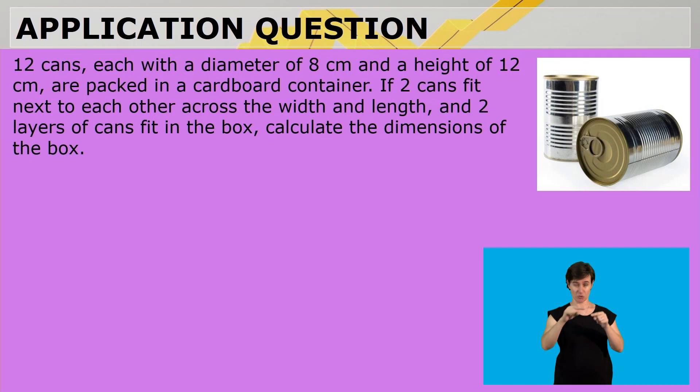Let's look at the last question. 12 cans, each with a diameter of 8 centimeters and a height of 12 centimeters, are packed in a cardboard container. If two cans can fit next to each other, across the width, so it's two cans, across the width, and also across the length, so there will be two as well, and it can have two layers that can fit in the box.